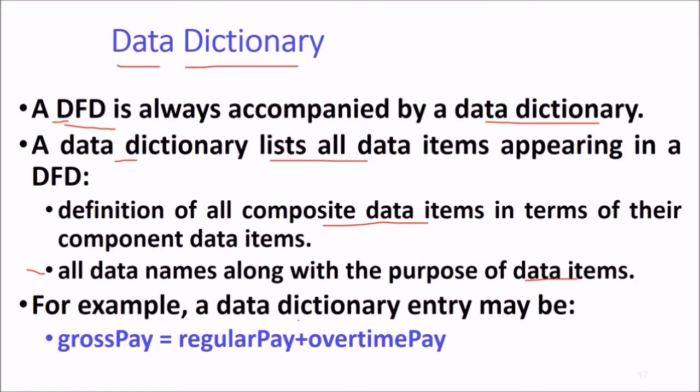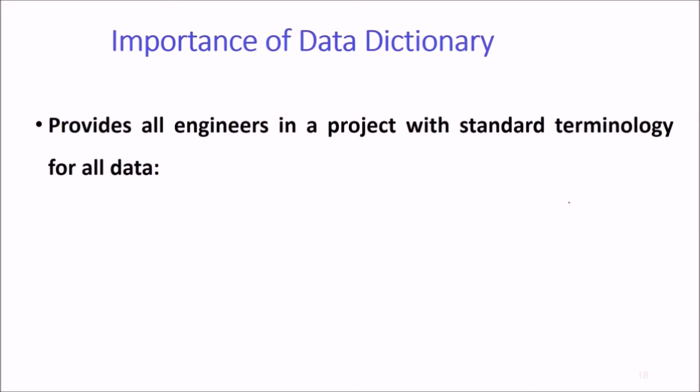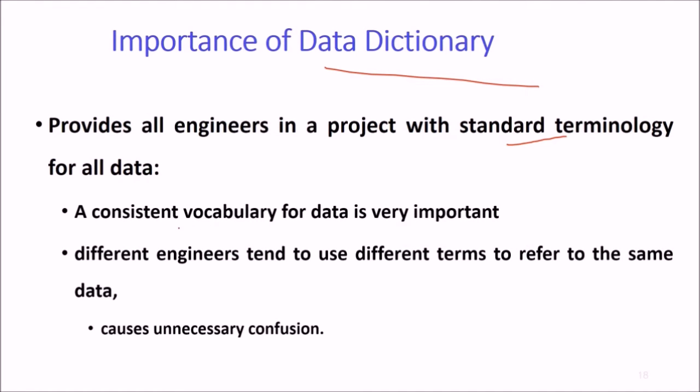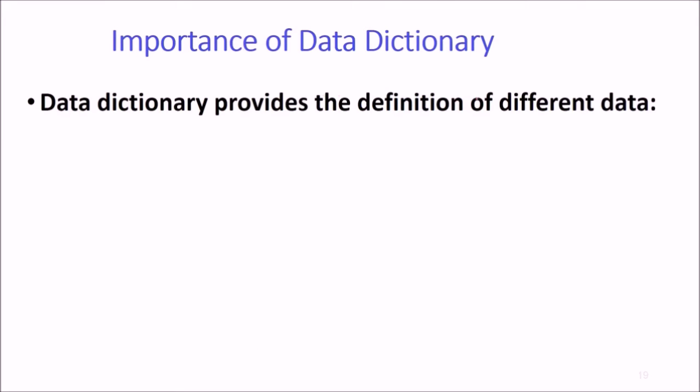For instance, a data dictionary entry may be something like gross pay equals regular pay plus overtime pay. The importance of data dictionary: it provides all engineers in a project with standard terminology for all the data. A consistent vocabulary for data is very important. Different engineers tend to use different terms to refer to the same data, which causes unnecessary confusion.